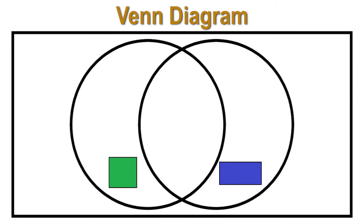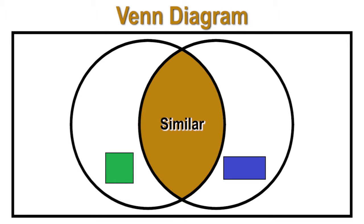Let's begin by comparing the two shapes, a square and a rectangle. The section in the middle is where the properties are written that are the same for both shapes.